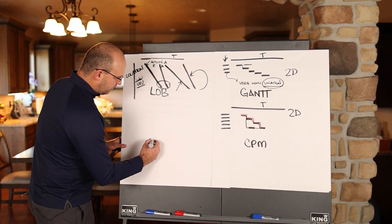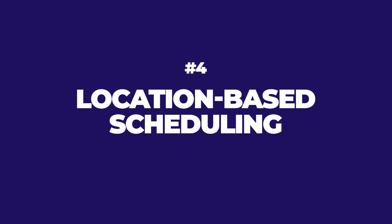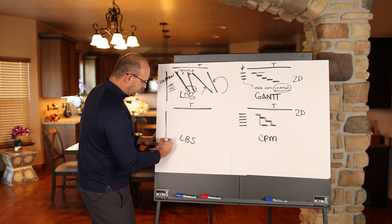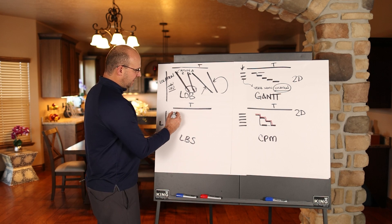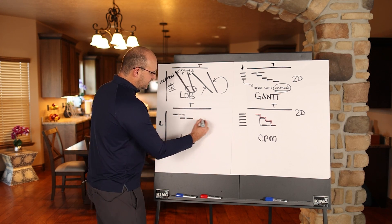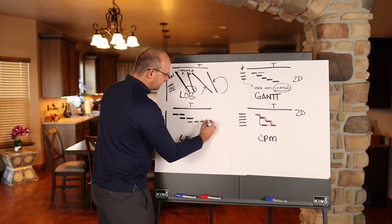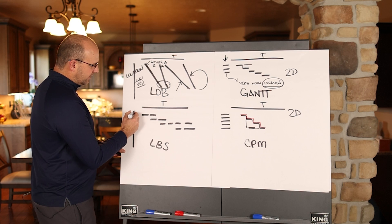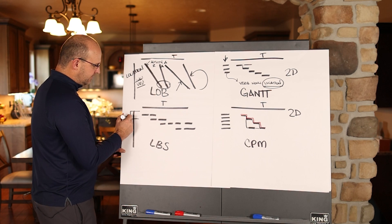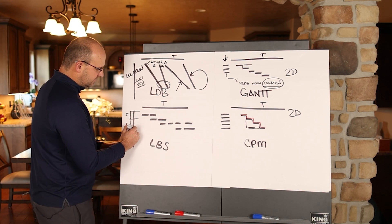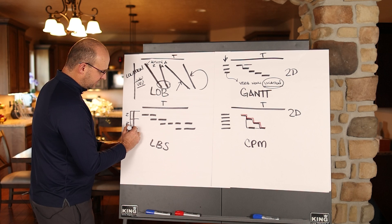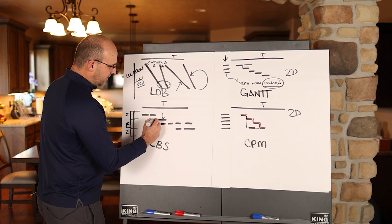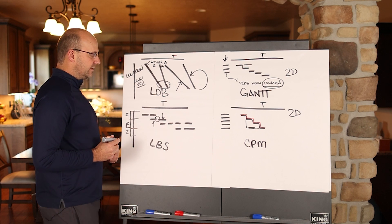The next one I want to talk about is location based scheduling. And that is where you have time on the top, and you have location on the left. And you can actually map out your activities here in the schedule, and it's formatted in time by location. And what makes this really valuable is that you can have zones over here on the left.